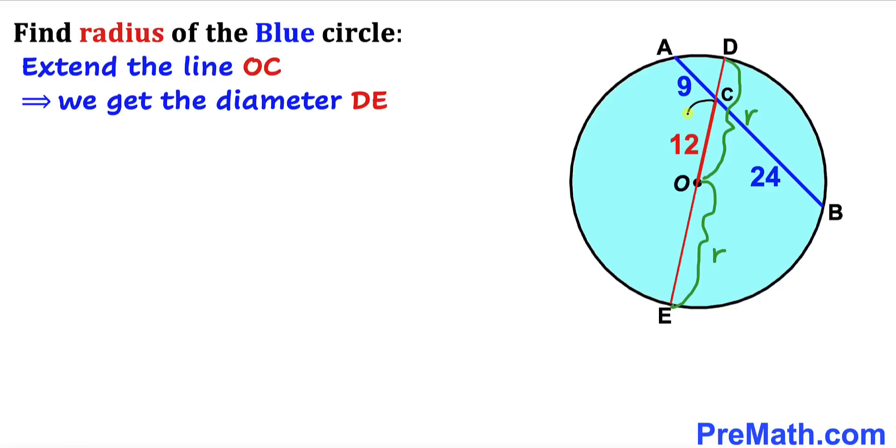Therefore distance CE is going to be r plus 12, and distance CD is going to be r minus 12. So our CE distance is r plus 12 and CD distance is r minus 12.